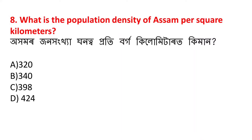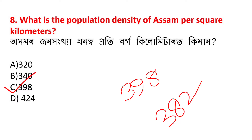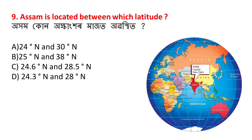What is the population density of Assam per square kilometer? Ohamor zanohinkhyaar ghanatta poti borgokilimetar at kimaan? The answer is C - 398 persons per sq km. And Assam is located between which latitude?